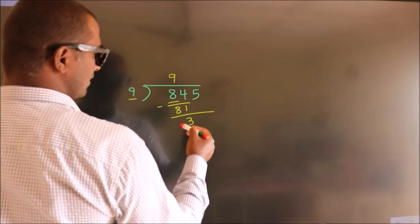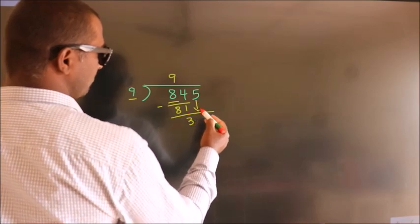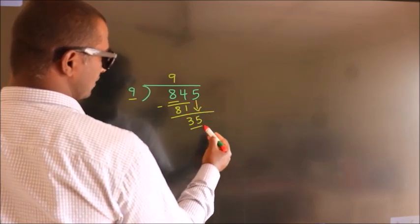After this, bring down the next number. So 5 down, giving us 35.